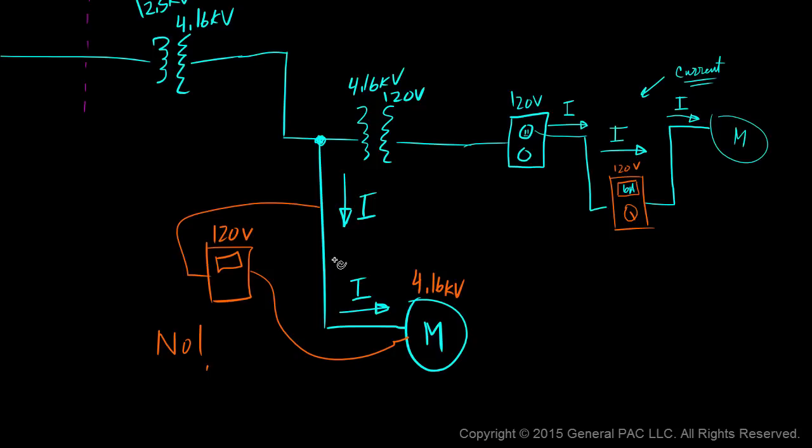A current transformer would hook up to this line here at a much higher voltage. This current, which would be a higher magnitude of current, would transform the current and bring down the voltage to a much more safer and manageable level so that we could use our handy dandy multimeter. So we would simply do this right here.